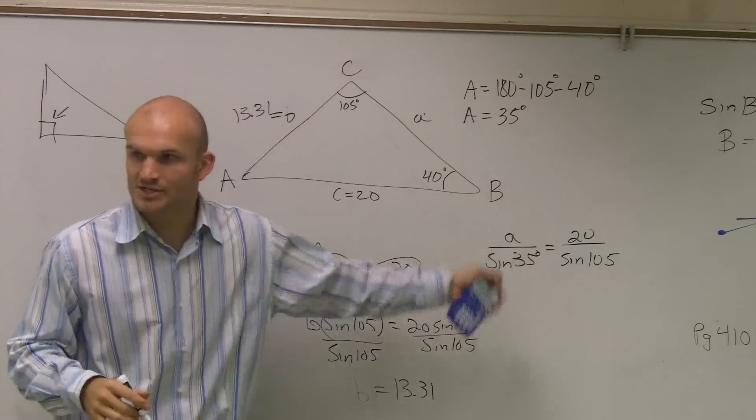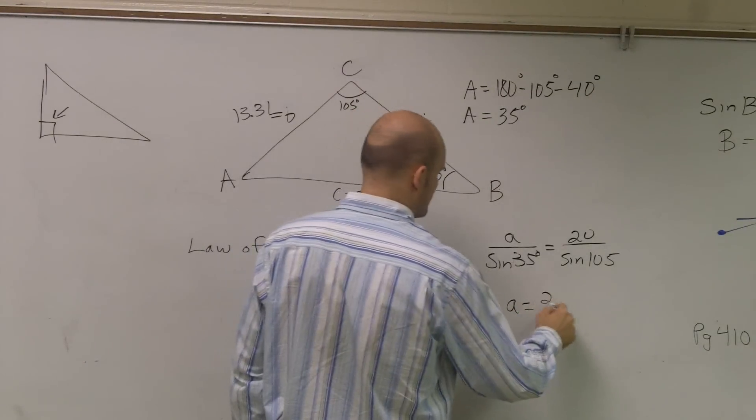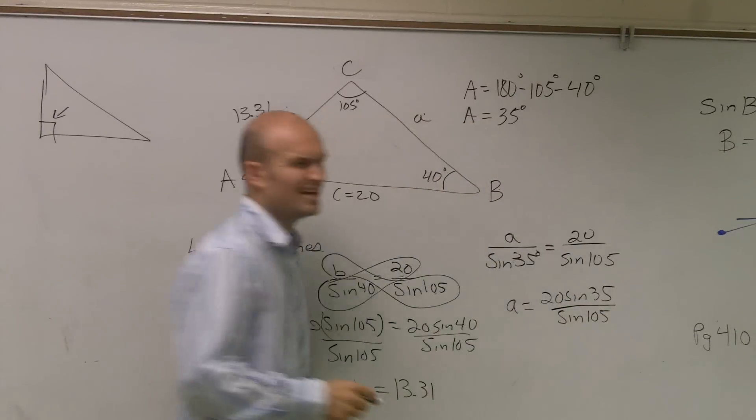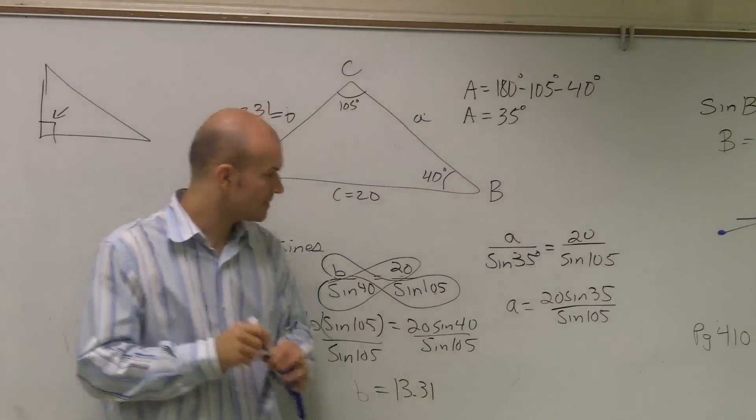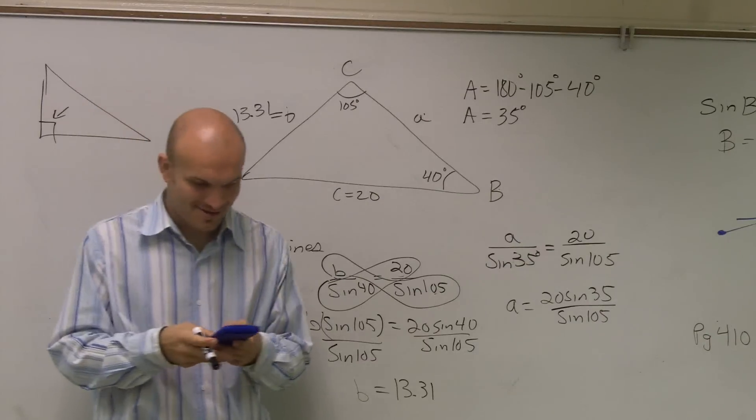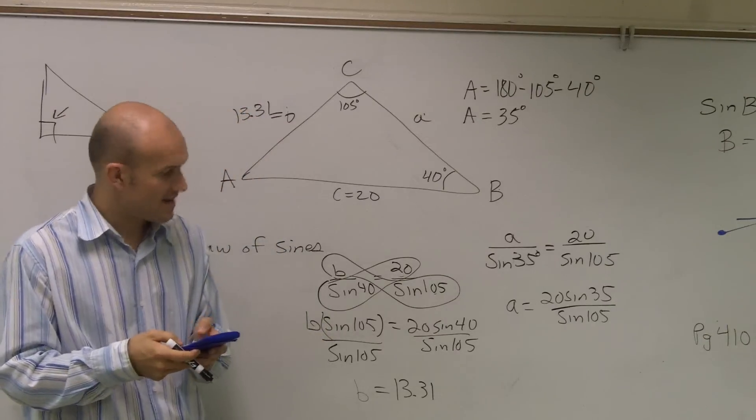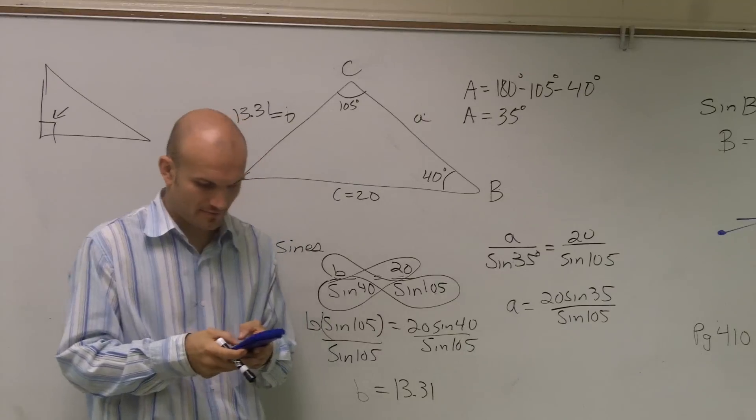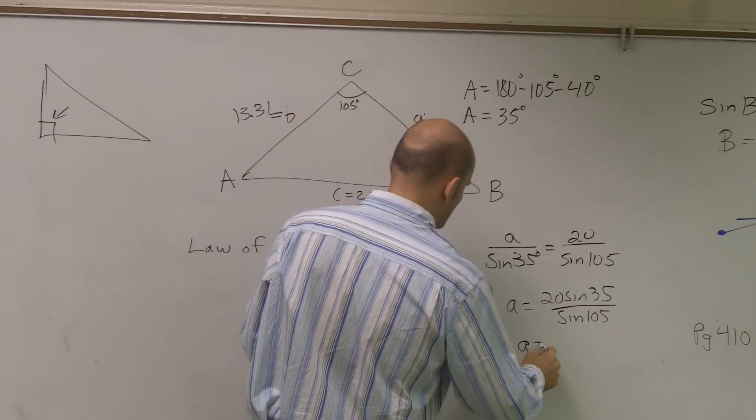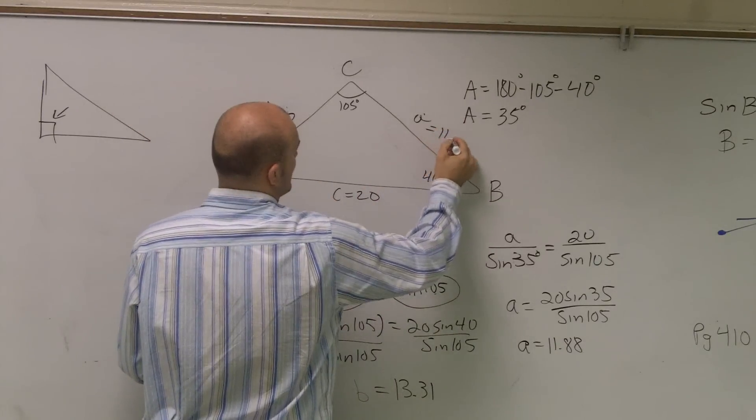I'm not going to do the whole cross multiplication for you. I'm just going to write it out how it's going to look. So therefore, A equals 20 sine of 35 divided by sine of 105. So now you can do the same thing. 20 times sine of 35, close the parentheses, divided by sine of 105. And that equals 11.88.